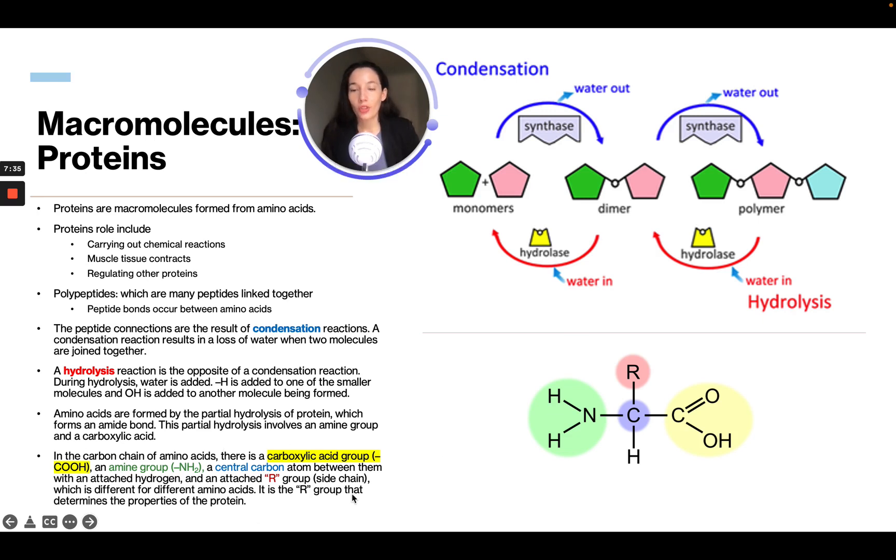In a carbon chain of amino acids, there is a carboxylic acid group in the yellow, an amine group in the green, a central carbon between them with an attached hydrogen, and an attached R group, which is a side chain different for different amino acids. Depending on what type of amino acid it is, that R will be different. It is the R group that determines the properties of the protein.